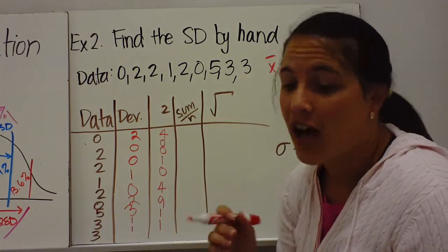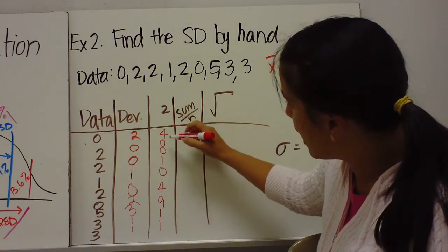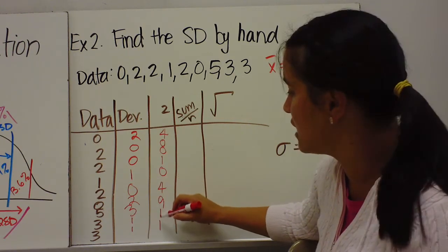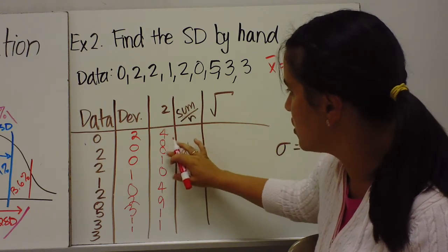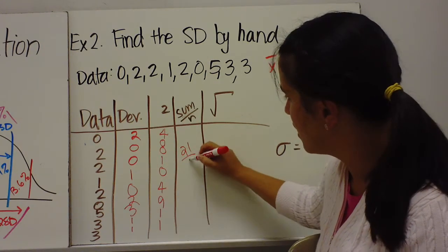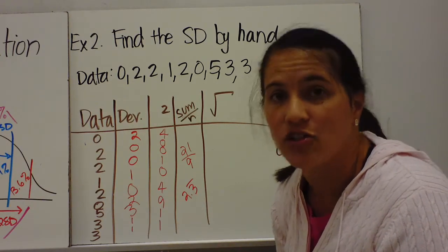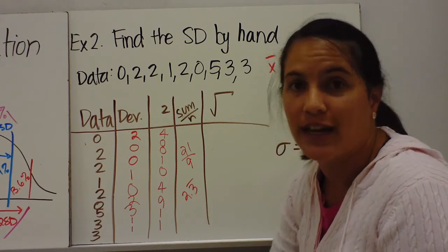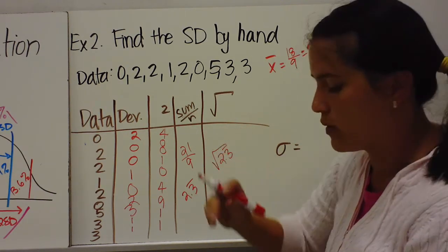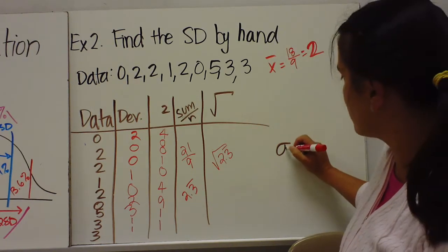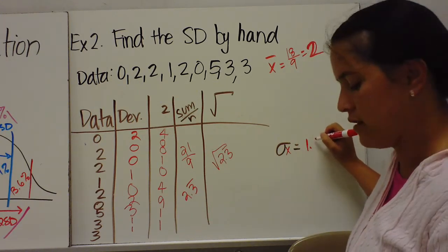Step four: take the average of the squared deviations. Adding them up gives 21, divided by 9 equals approximately 2.3 repeating. Step five: take the square root of 2.3 repeating. The standard deviation is approximately 1.5.